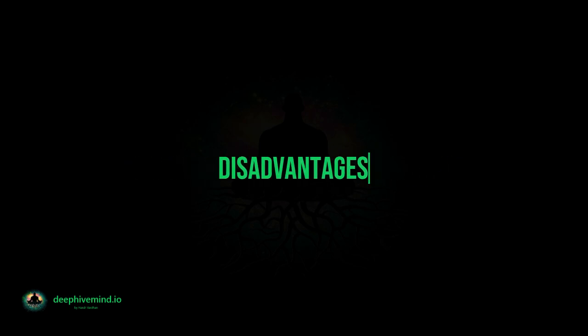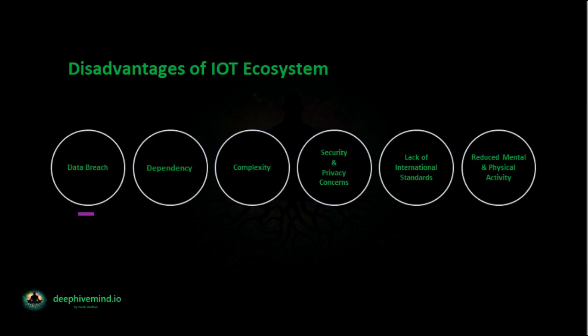Disadvantages of IoT. Data Breach: The physical objects in IoT connect to the Internet to transmit and receive information, so user data is available on the Internet and hackers can access this private and sensitive information. A data breach occurs when outsiders access user data without the user's awareness, and this data can be used to manipulate the user.